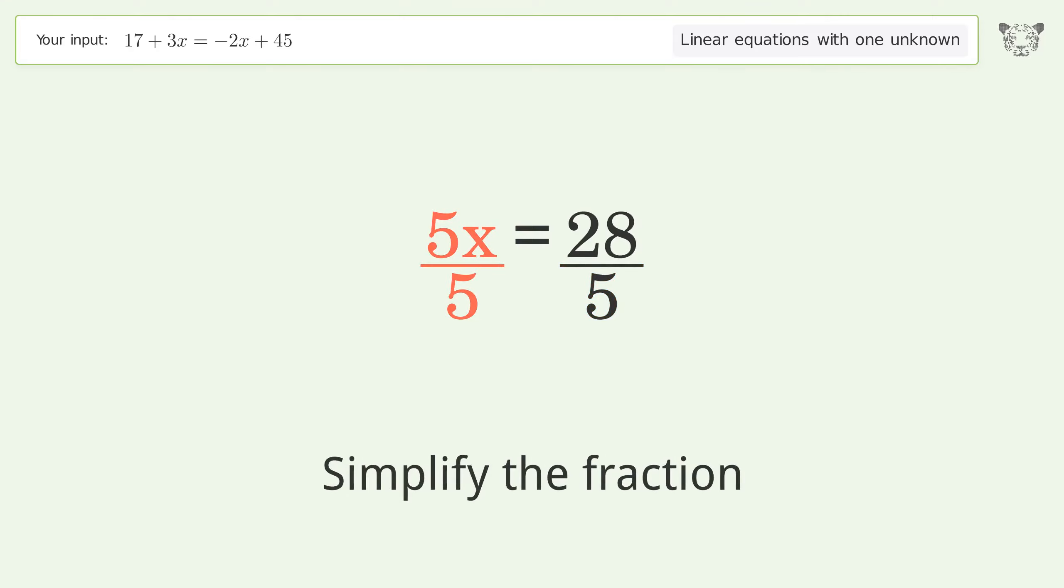Isolate the x. Divide both sides by 5. Simplify the fraction.